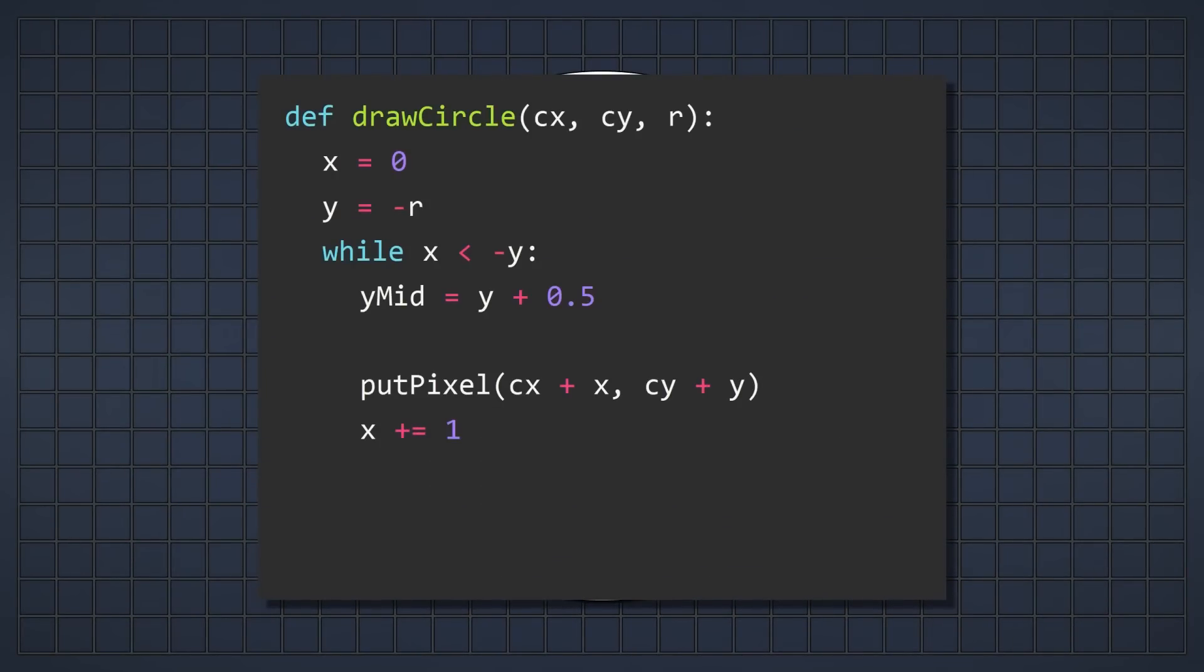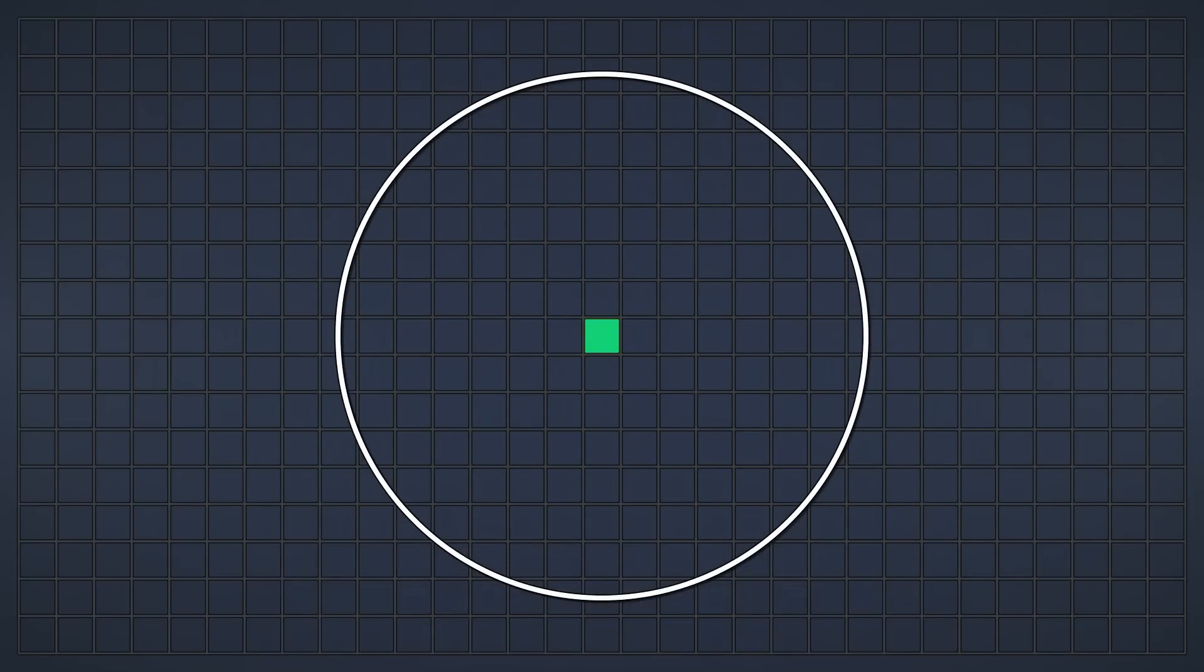Back to our code, we can calculate if the midpoint is inside the circle. We square x and yMID and make sure that the result is larger than r squared. Note that we're not taking the square root here, and instead just compare everything to r squared. This lets us avoid the square root function, which is kind of inefficient. All we have left to do is place pixels in the remaining octants.